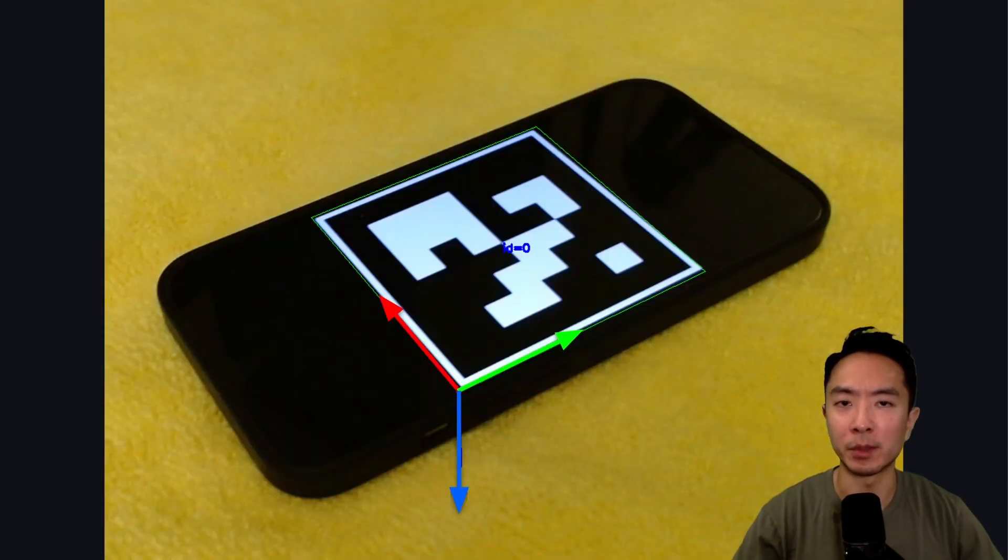The next thing we need to do is pose estimation with our ArUco markers. If you're new to that, I have a video on that as well, so go ahead and check it out on my channel. The idea of this is we want to figure out both the position and orientation of our marker. The position is defined by the origin of this frame that you see here, and the orientation is the x, y, and z axes that you see in this image.